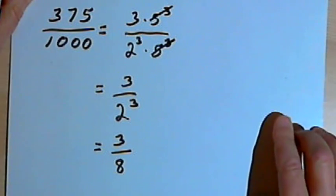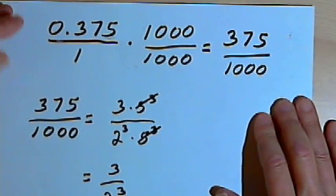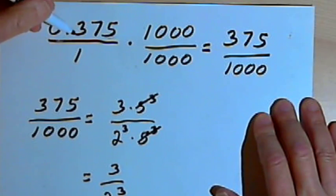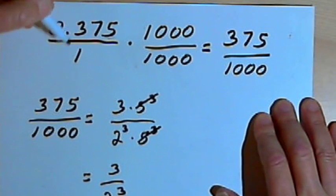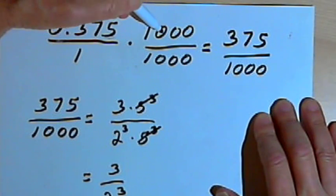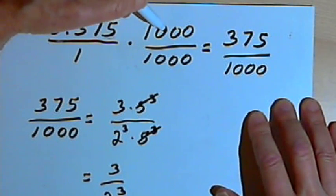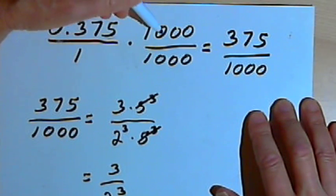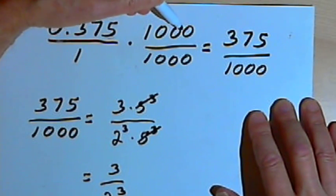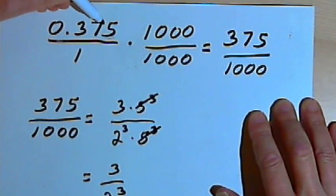Let me just repeat the steps quickly. Take your terminating decimal and give it a denominator of 1, and then multiply it by a version of 1, which is going to be a power of 10 over the same power of 10. You can have as many zeros in your power of 10 as you have decimal places that you want to get rid of.